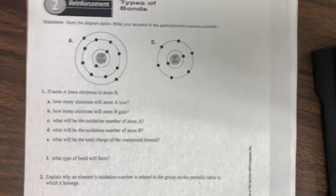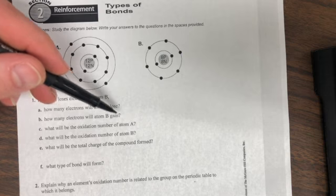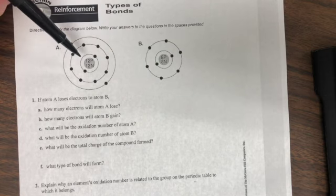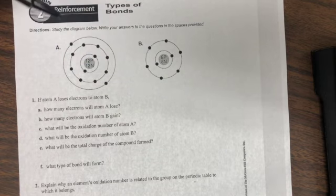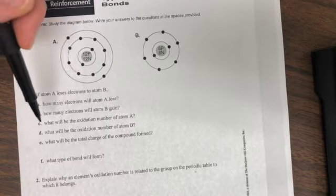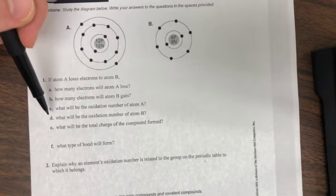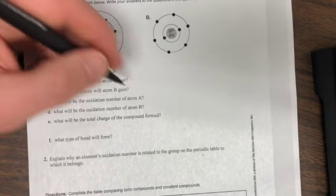Letter B: how many will atom B gain? Again, atom B wants the same thing as atom A. Right now it has six valence electrons. How many does it want and how many does it need to get? See, what will be the oxidation number of atom A? This is the number given away.